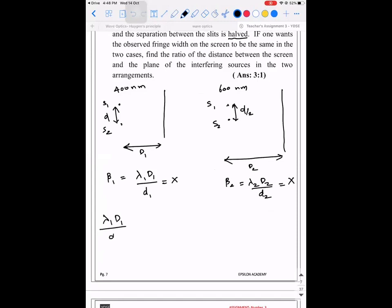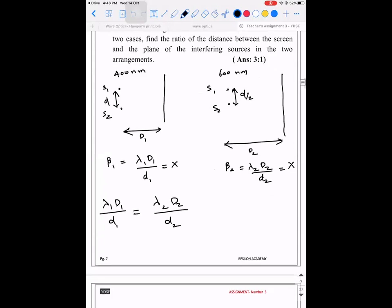Lambda 1 into capital d1 divided by d1 is equal to lambda 2 into capital d2 divided by d2. So lambda 1 is 400 into d1 divided by d is equal to lambda 2 is 600. It is increased to 2, not by. So 600 into d2 divided by small d2, that is d by 2.